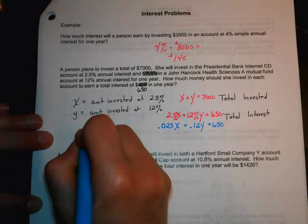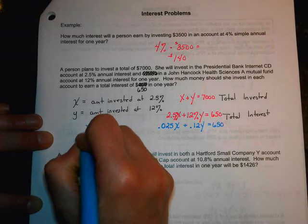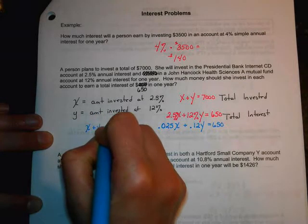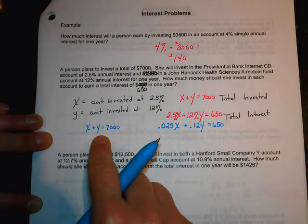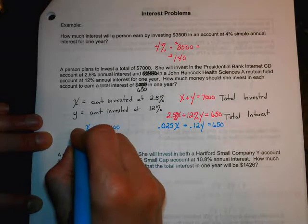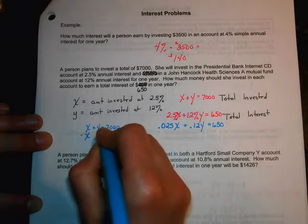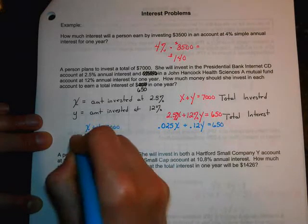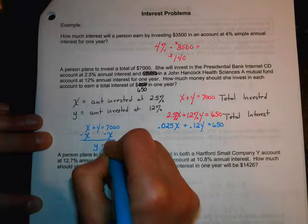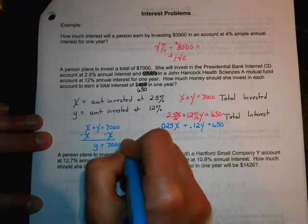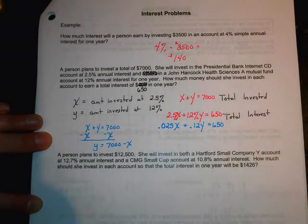We have X plus Y equals 7,000. So, I'm going to go ahead and solve for one variable in terms of the other. So, I just like to solve for Y. So, I'm going to get Y equals 7,000 minus X.